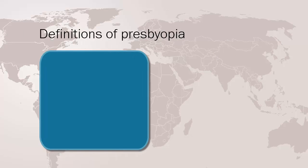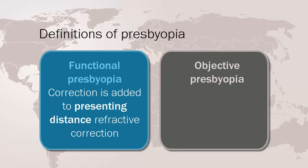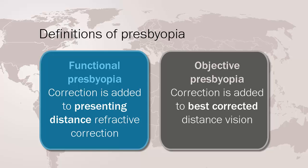Definitions of presbyopia: In functional presbyopia, significant optical correction must be added to presenting distance refractive correction to achieve a near visual acuity improvement of either more than one line, or so that N8 print can be read. N8 print is the same size as newsprint. Objective presbyopia is defined as needing significant optical correction of greater than plus one diopter added to best corrected distance vision to improve near vision to N8 print. It's important to remember the difference between these two definitions when you review epidemiological data, because people with uncorrected myopia do not develop functional presbyopia.